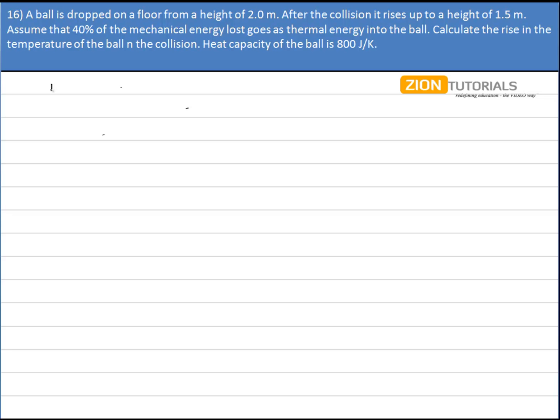Now first of all, I will calculate the initial potential energy of the ball using the formula MGH. Let the mass be M, g is 9.8, and H is 2 m.